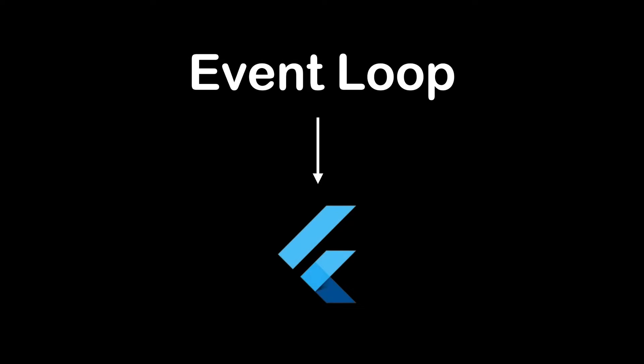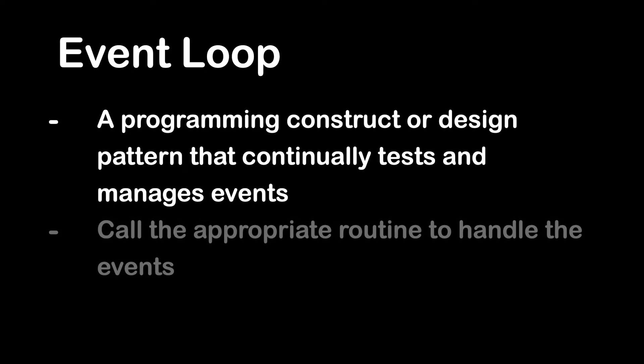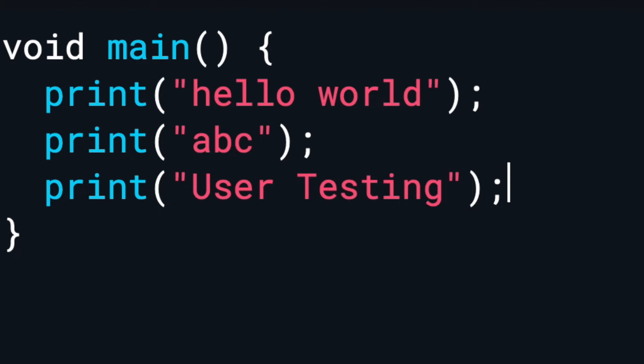In this video, we're going to talk about event loop in Flutter. What is event loop? Event loop is a programming construct or design pattern that continually tests and manages events and calls the appropriate routine to handle them. For example, the main function in the program is also the event loop that typically waits for the user to trigger something.